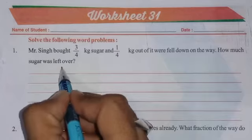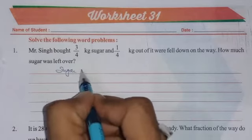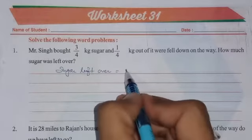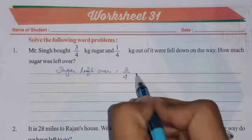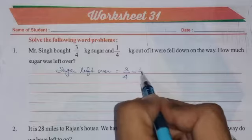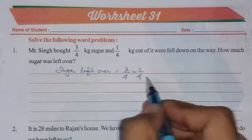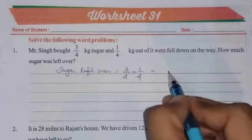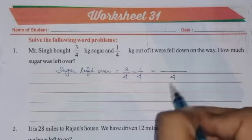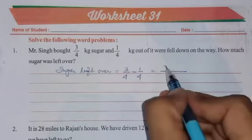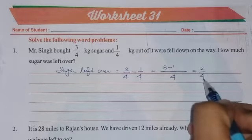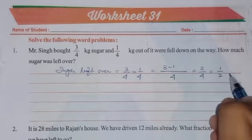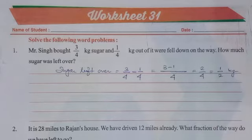So sugar left over. Total sugar was 3/4 kilogram. Now subtract what fell down on the way, that is 1/4. As you can see, the denominator is the same in both fractions. So the LCM will be the same number, 4. Now subtract the numerators: 3 minus 1 means 2/4. Both numbers are divisible by 2, so you will get 1/2 kilogram. This is the answer.